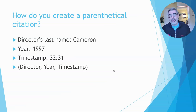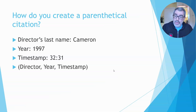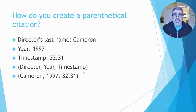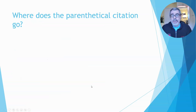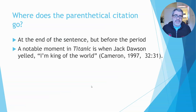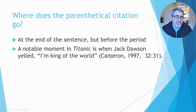In our case, it's the 'king of the world' quote — James Cameron, 1997. The timestamp, meaning when that line of dialogue started — 'I'm king of the world' — started at the 32-minute, 31-second mark. When we put all that information into the model, it should look just like this, with commas separating each portion of the parenthetical citation. It goes at the end of the sentence but before the period. For example: 'A noble moment in Titanic is when Jack Dawson yelled, I'm king of the world.' The parenthetical citation appears right there, before the final period.